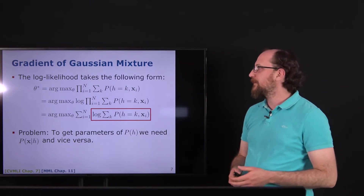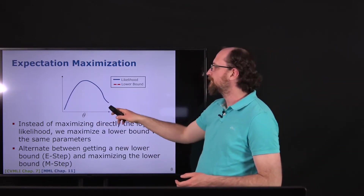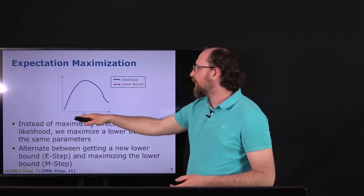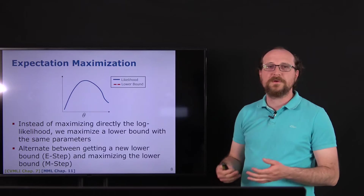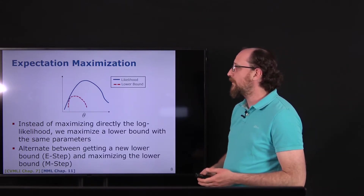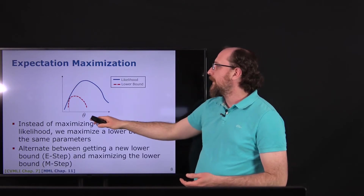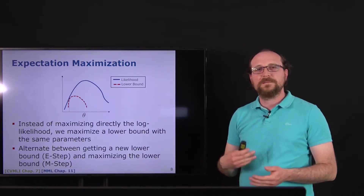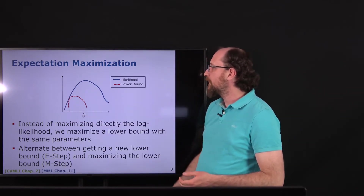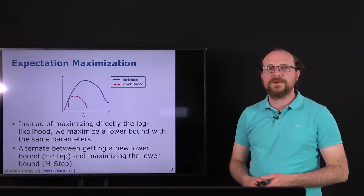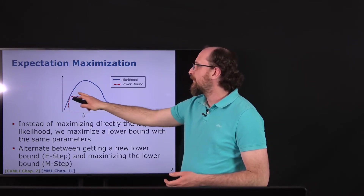Expectation Maximization works with our log-likelihood function over some parameters. Instead of trying to find the parameters directly — which might be complicated — we use a lower bound. This lower bound is always below the likelihood function but is easier to take gradients from. The lower bound always stays below the likelihood function.